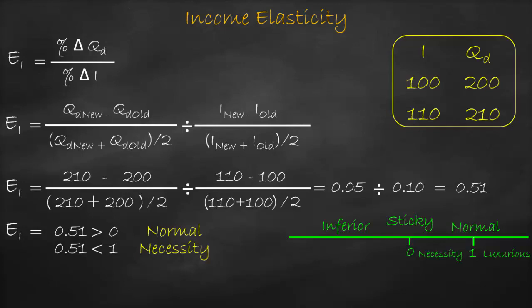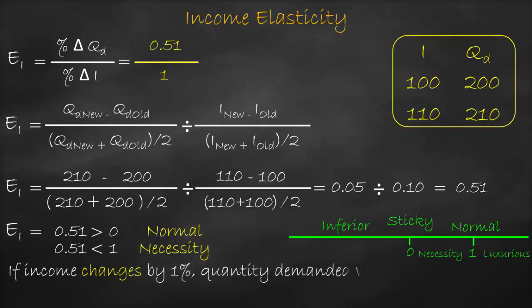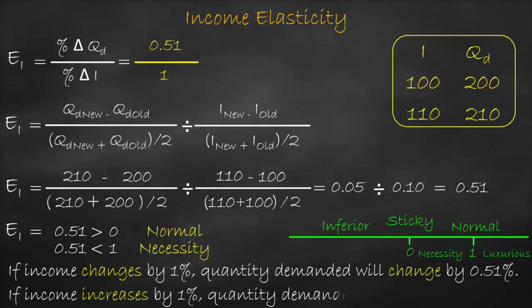Therefore, this good is a normal necessity because it falls between zero and one. We interpret it as: income elasticity equals 0.51 divided by 1, which equals 0.51. This means if income changes by one percent, quantity demanded will change by 0.51 percent, or more precisely, if income increases by one percent, quantity demanded will increase by 0.51 percent.